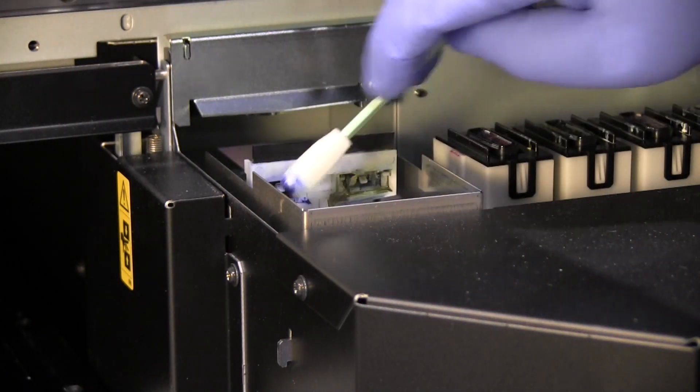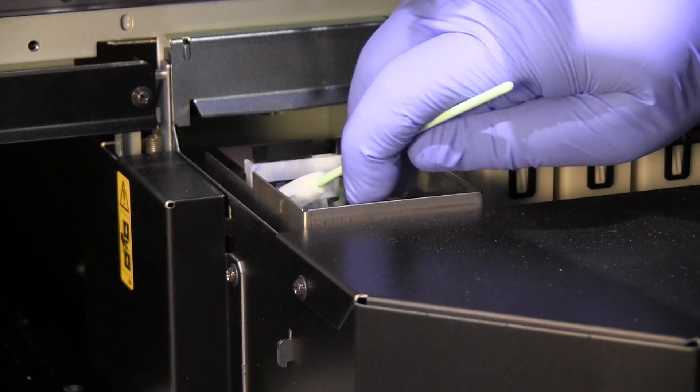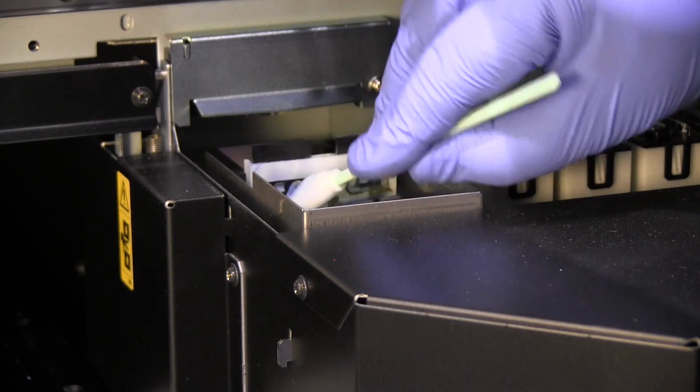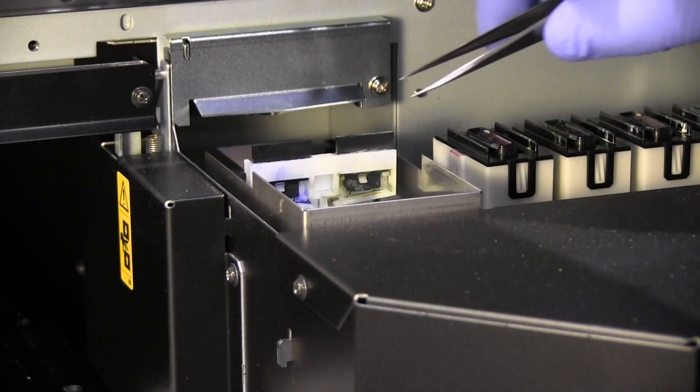Take the chance at this stage to check the condition of the wiper. If the wiper looks old and worn it may need replacing. Again you can use your torch to check the area for any hairs or fluff.